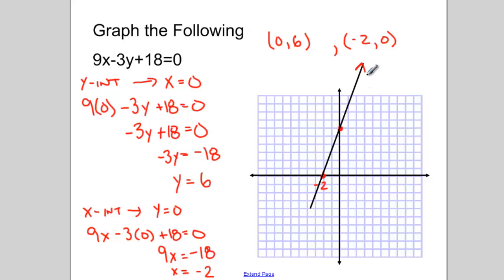Put some arrows on the end. And there's my graph of the equation 9x minus 3y plus 18 equals 0.